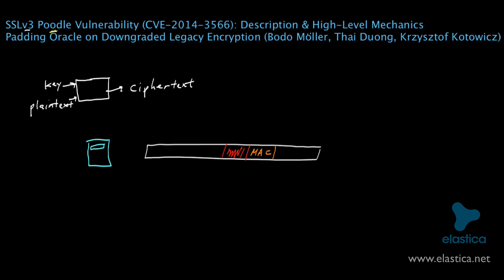So if a bad guy tries to modify this data en route, since he doesn't have access to the cryptographic keys, he won't be able to update the MAC value itself when he modifies the data. And so any attempts he makes to tamper with this portion of the data will be noticed.